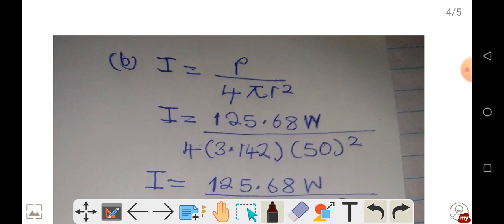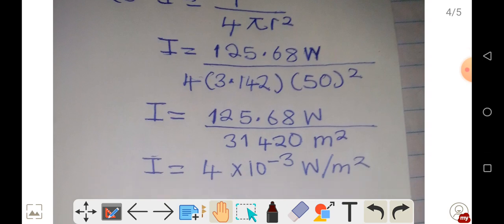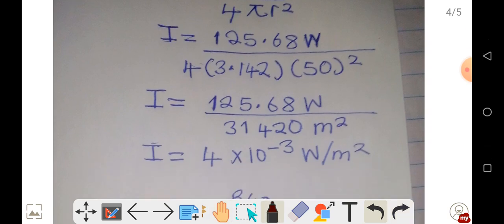When you do this on a calculator, you get the intensity, when the power is 125.68, to be 4 times 10 to the power negative 3 watts per meter squared. That's the intensity.